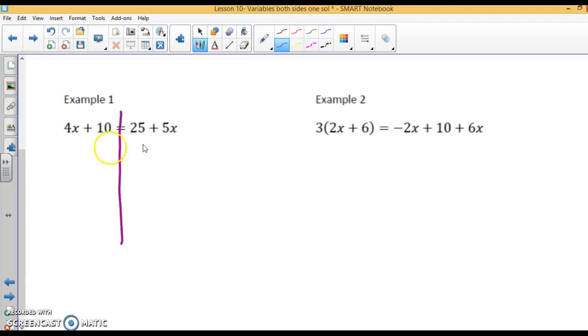I'm going to move this 4x over to the right. I subtract 4x from both sides. Make sure you write minus 4x. 4x minus 4x is 0. On this side, I'm left with 10 equals 25. 5x minus 4x is just 1x. Now I have my variables on one side. I'm going to solve by subtracting 25 from both sides. I'll have 10 minus 25 is negative 15 equals x.